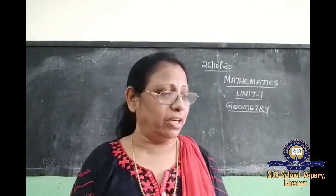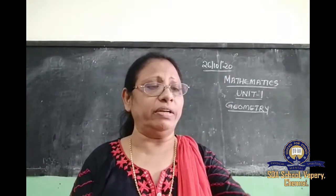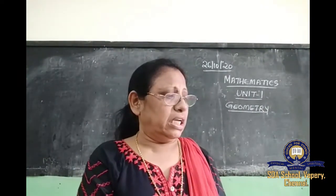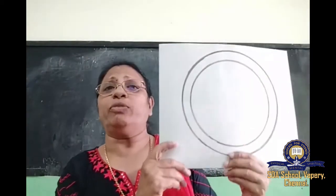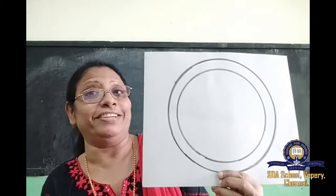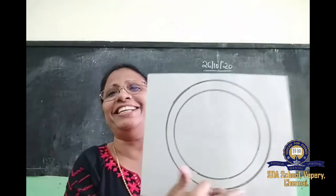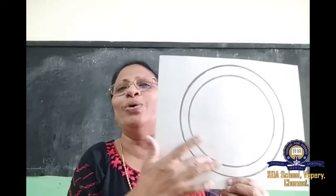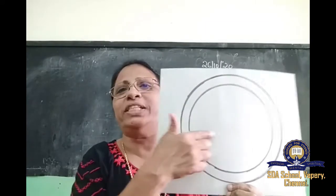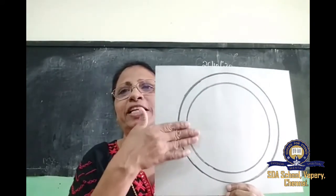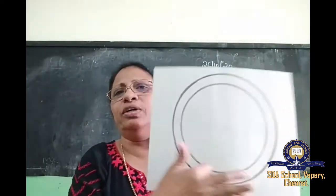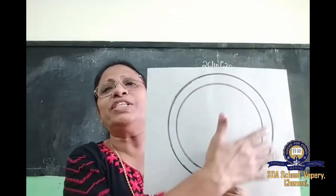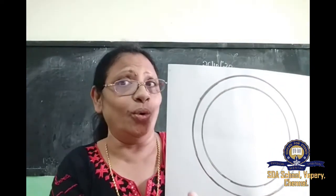Now, what are open shapes and closed shapes? I will tell you — pay attention. The first shape I am going to show is a circle. This is a circle and it is a closed shape. Is there any way to go inside? No — there is no cut here or there. There is no way to get inside this circle.